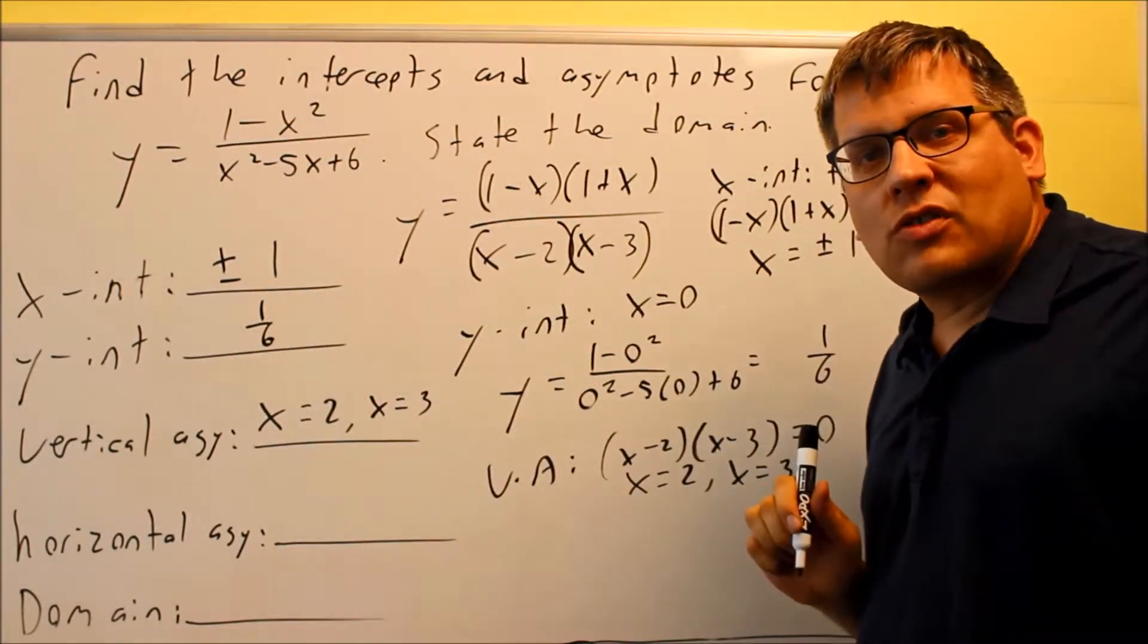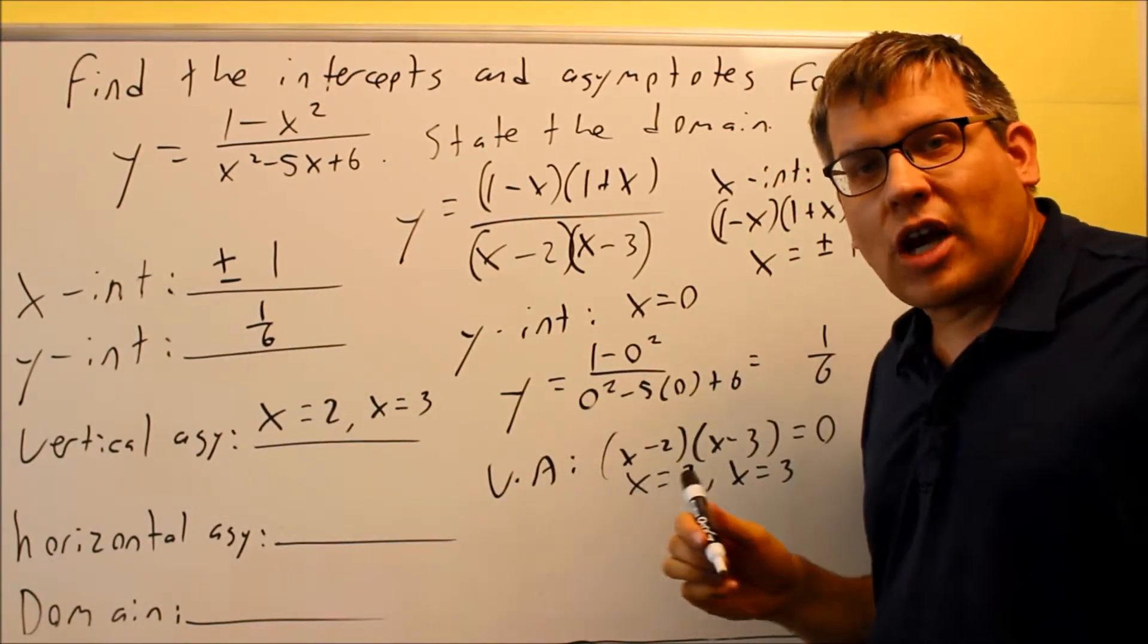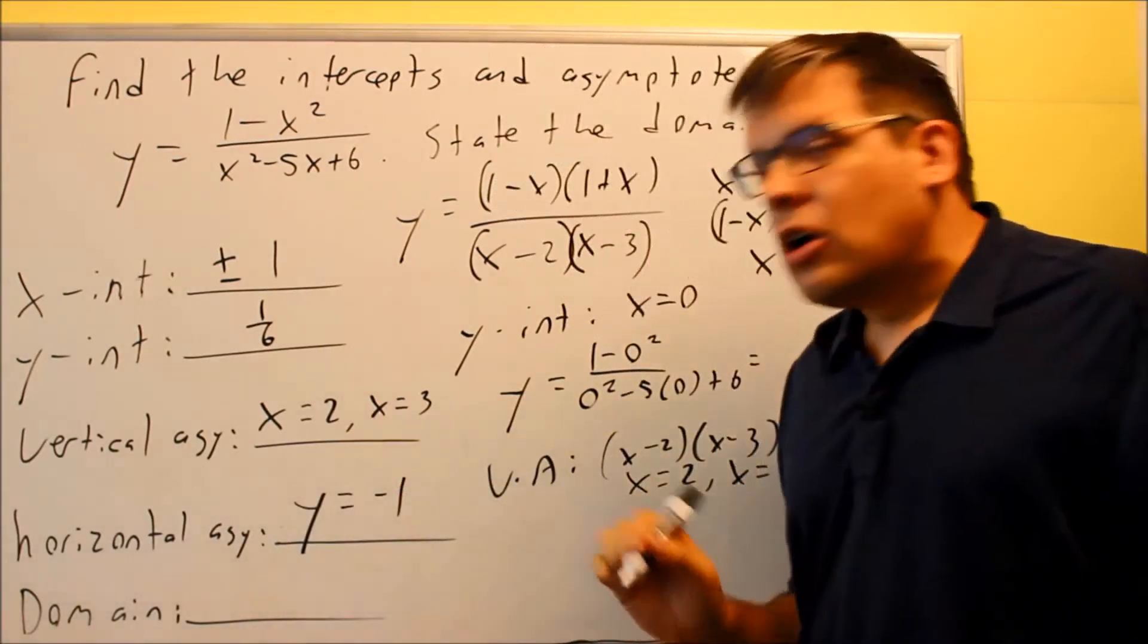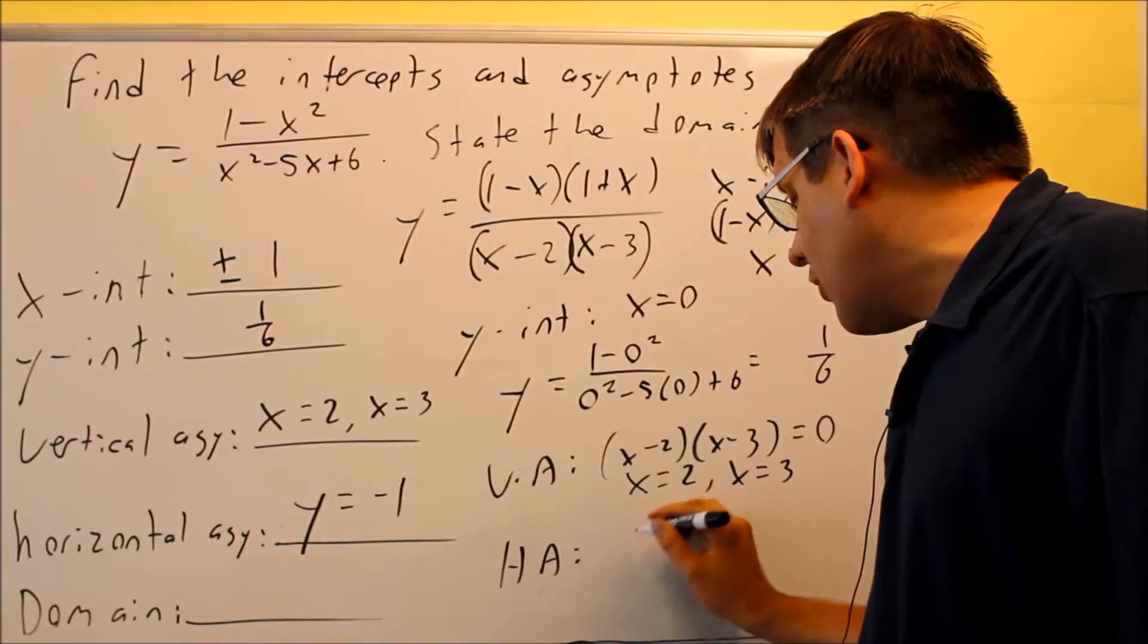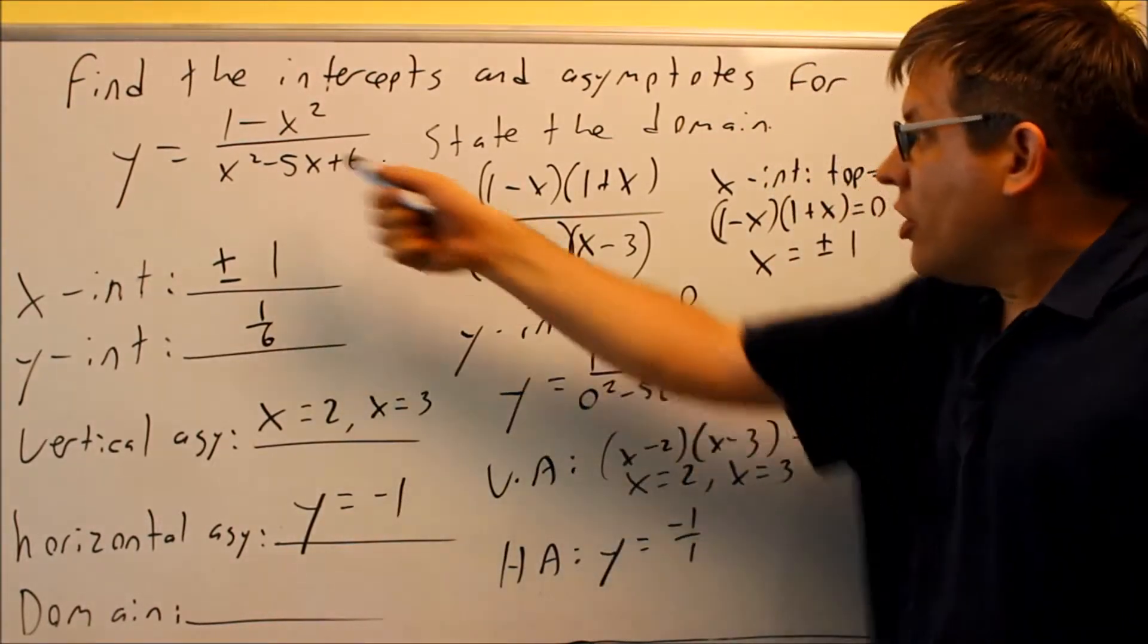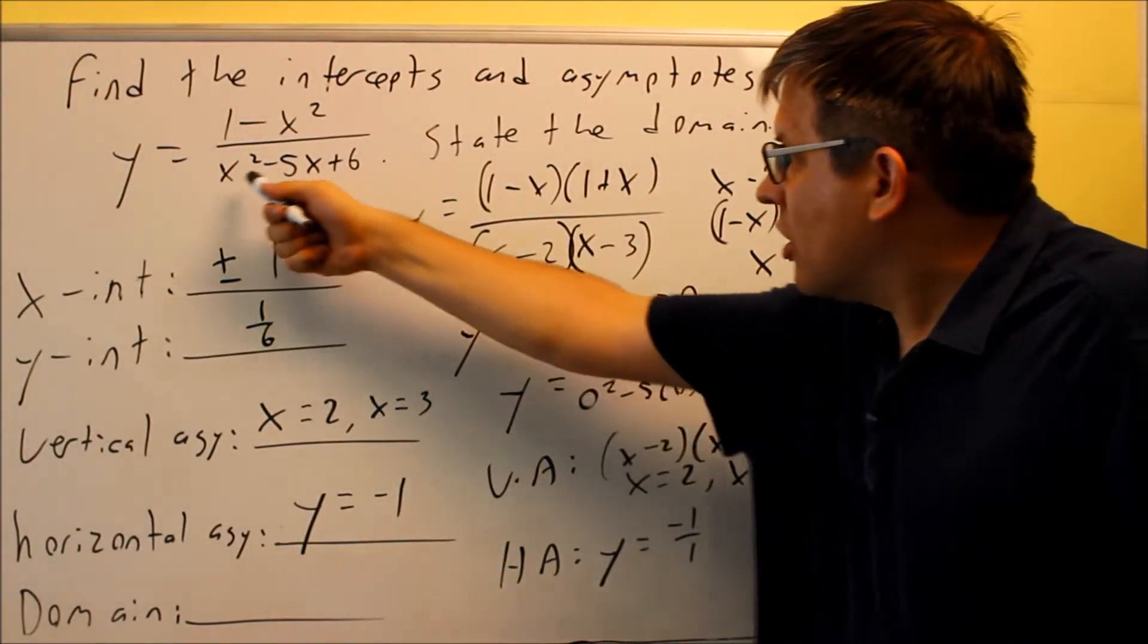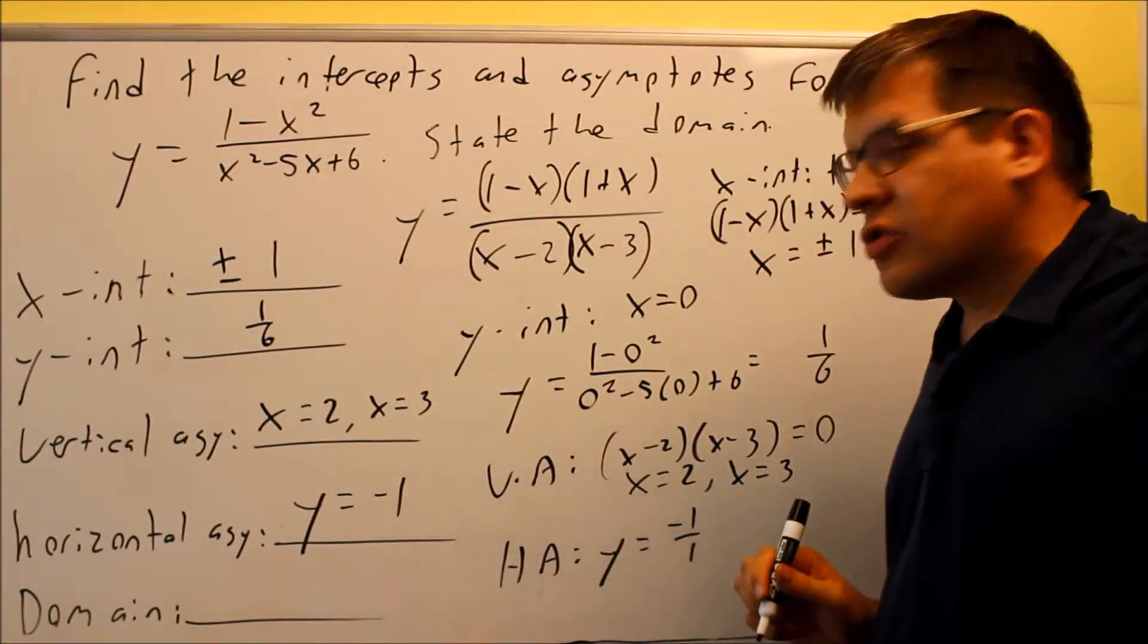In this case, there's a negative 1 that comes in front of there, and there's a 1 on the bottom. So negative 1 over 1 is going to give you negative 1. So therefore, your horizontal asymptote is going to be y equals negative 1. So the work for that, basically, again, you just have y equals negative 1 over 1. That's your leading coefficient of the top one. That's negative 1. It goes here. The bottom one is going to be 1. That goes there. So that's where we get y equals negative 1 from.